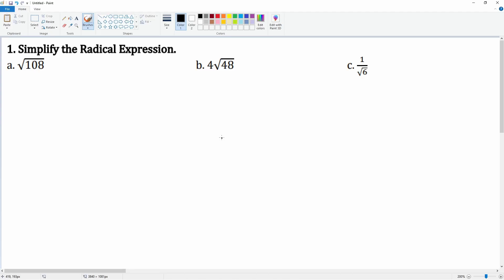Number one, you're going to simplify the radical expression. The way you want to simplify this is to break it into perfect squares. So let's see if there are some perfect squares inside here. I tried 108 divided by 36, oh that does work.